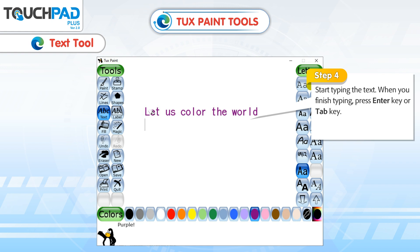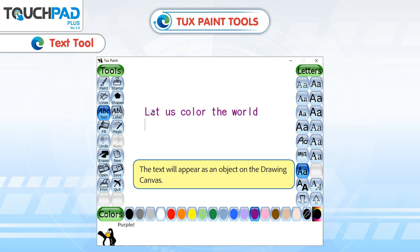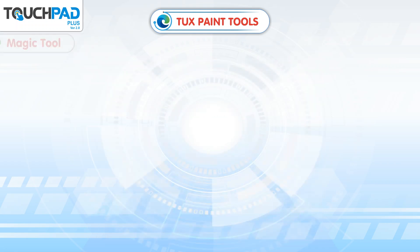When you finish typing, press the Enter key or Tab key. The text will appear as an object on the drawing canvas.